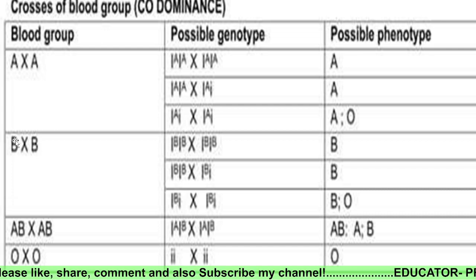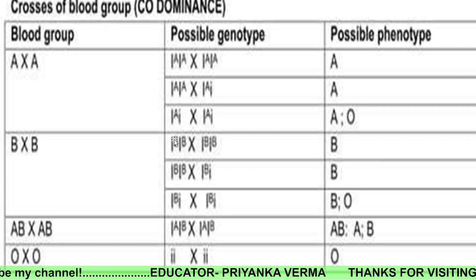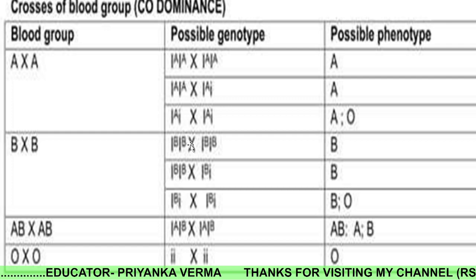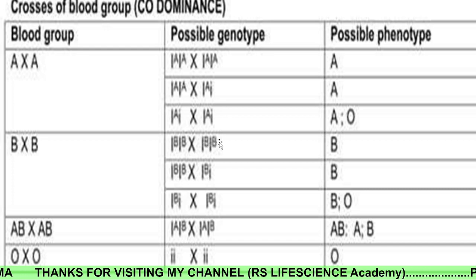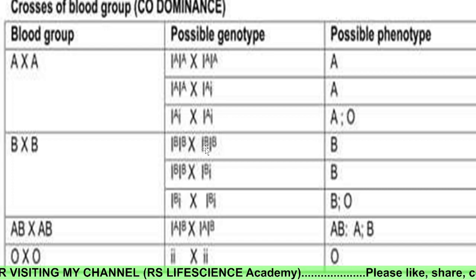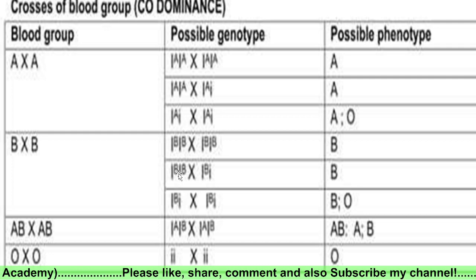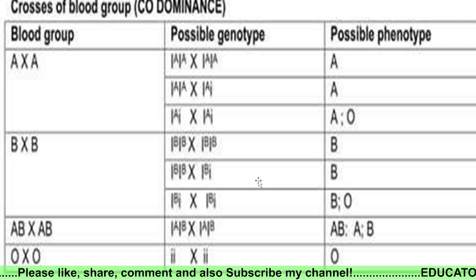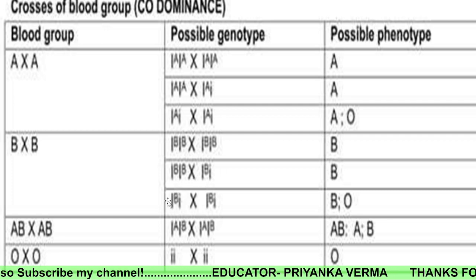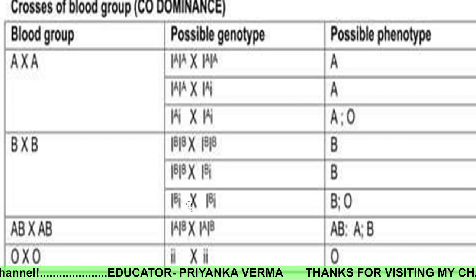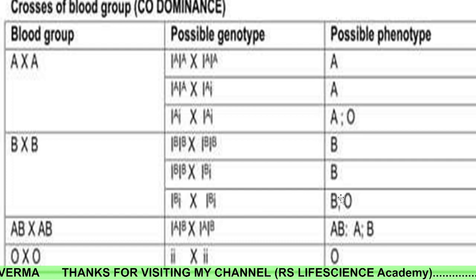If someone's blood group is B and is married to someone with blood group B, then there are two types of genotypes possible. The children's blood group can be B or O.